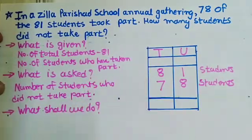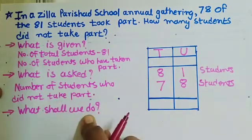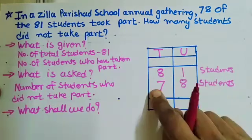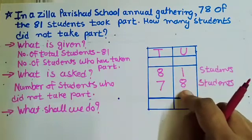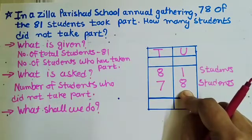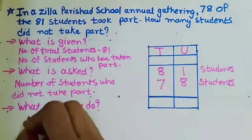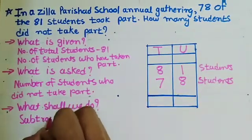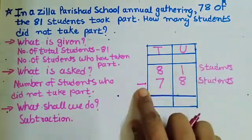So, in gathering — like this, children. To find out the number of students who did not take part, we have to find the difference between 81 and 78. From 81 students, 78 students took part — so how do we find the remaining students? By subtracting. We will put the sign of subtraction and start subtracting from the units column.